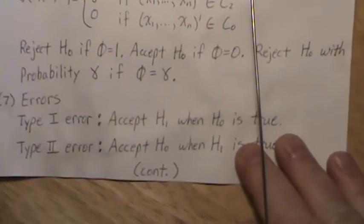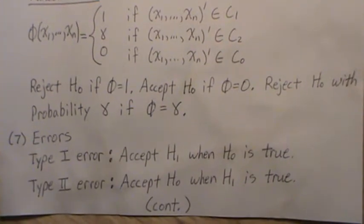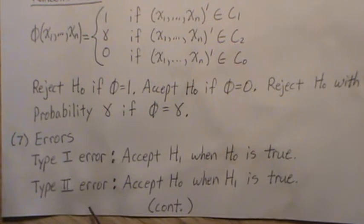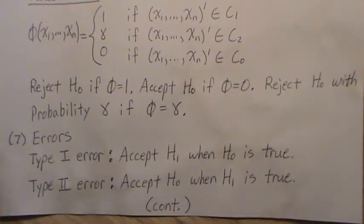Now the types of errors that we can commit—statisticians are not always the most creative people. They call them type 1 error and type 2 error. The true state of nature could be one of two things: H0 is true or H1 is true.